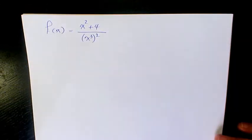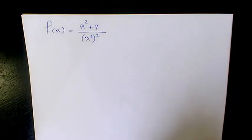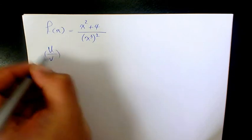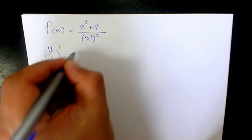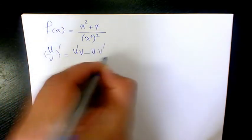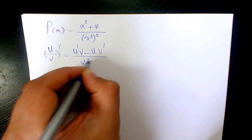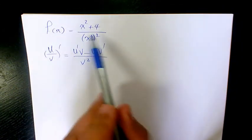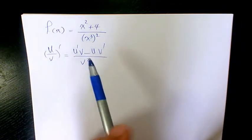Next example. We have x squared plus 4 divided by x cubed, to the power of 2. Again, we need to use the same method: u prime v minus u v prime divided by v squared. But here, we need to use the chain rule as well.